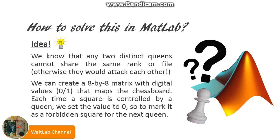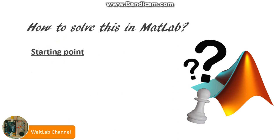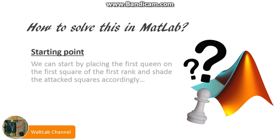Whenever a square is attacked, we set the value to 0, so that this marks the square as forbidden for the next queen. If a square is free, then we can set the value to 1. We can place the first queen on the first square of the first rank, and shade the squares accordingly.